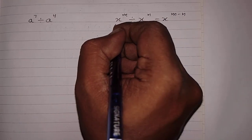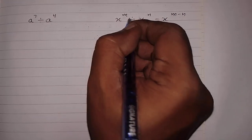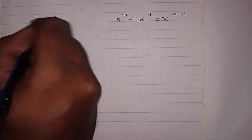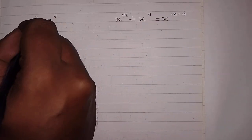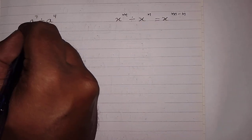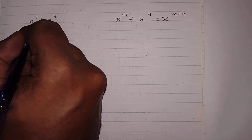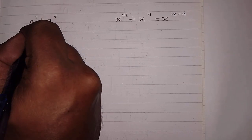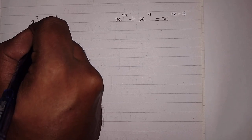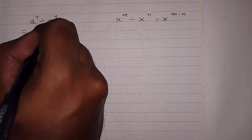So if the bases are the same and they are being divided, the power will be subtracted. Here the base is a and they are being divided, so the power will be subtracted — giving us a raised to the power 7 minus 4.